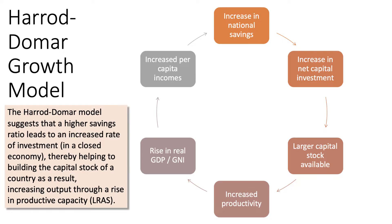If investment goes up, then the size of the country's capital stock increases. The country has more capital to work with — more tractors, more machinery, more technology, for example. Over time, that leads to higher productivity, which generates an increase in real GDP or gross national income. If that then feeds through to higher per capita incomes, people have more money available to save, so there's a positive feedback loop.